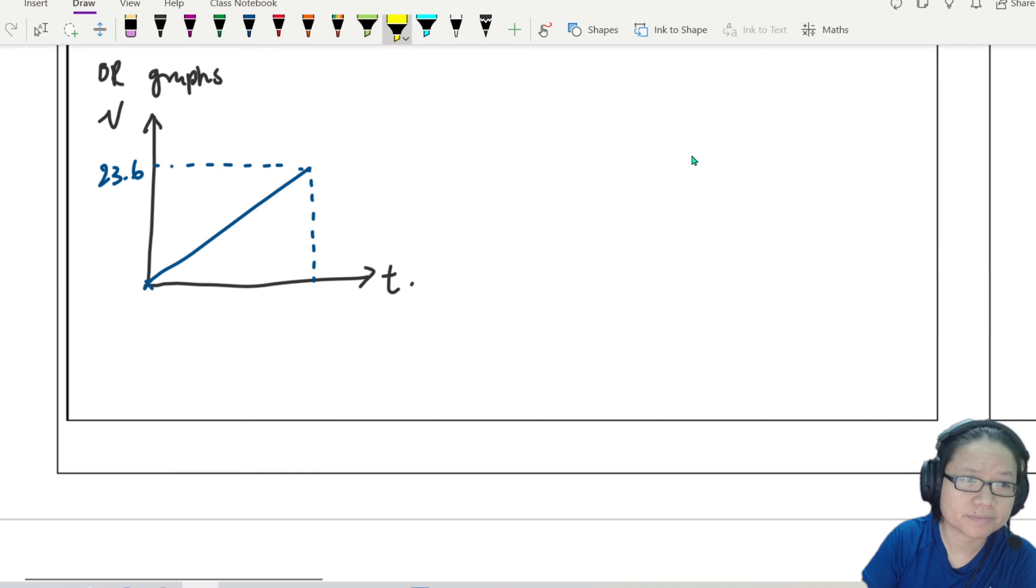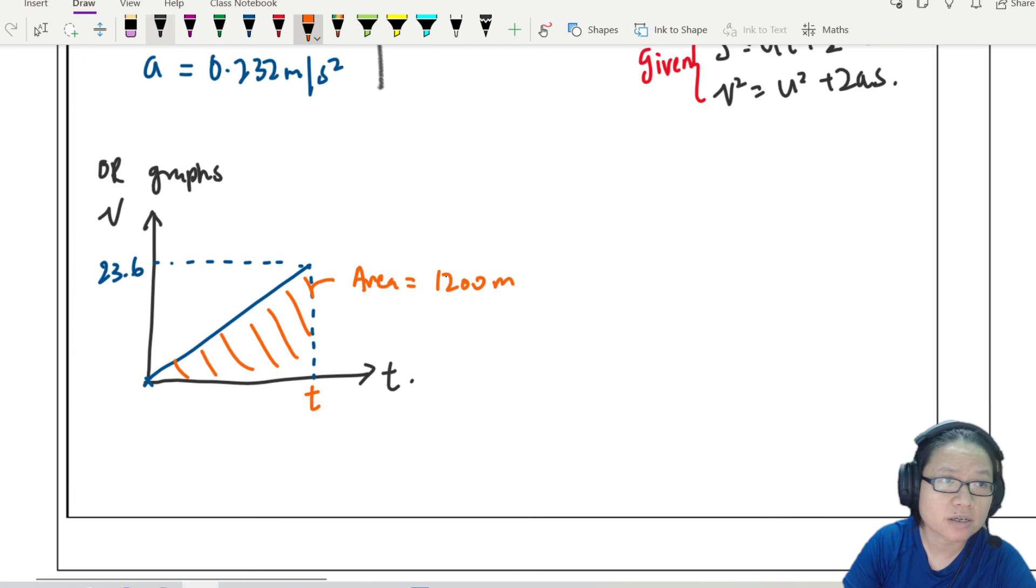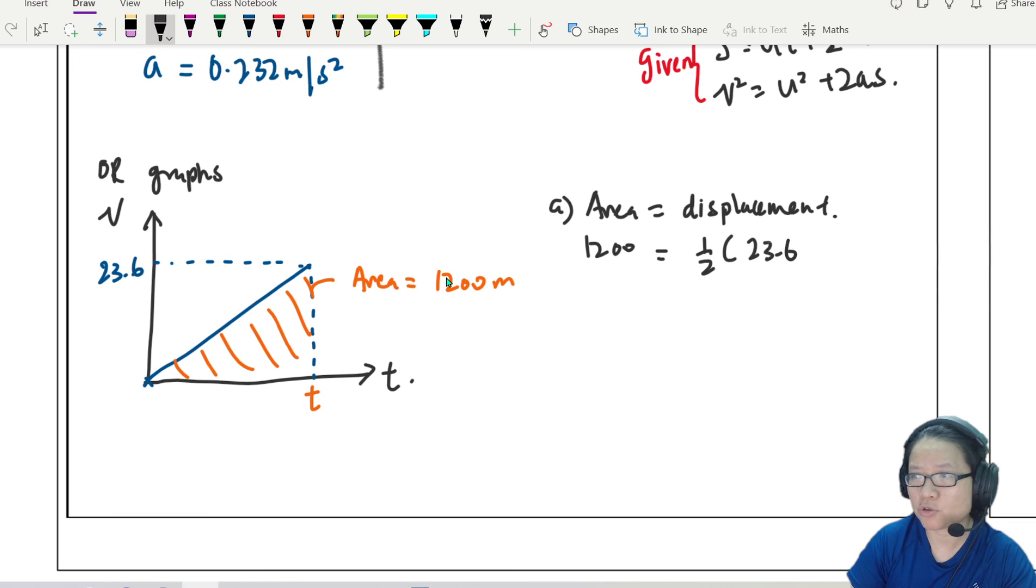Don't know what the time is. But, I know the area. The area of this graph must be 1.2 km. So, area must be equal to 1,200. Can you find T? Because once you find T, you can find gradient. And gradient is the acceleration. So, step A. I know area is displacement. So, 1,200 will be equal to half. Looks like a triangle to me, right? 23.6 multiplied by T. So, from here, we can find T. 2,400 divided by 23.6. This will be 101 seconds.